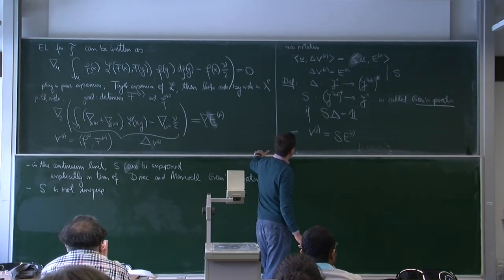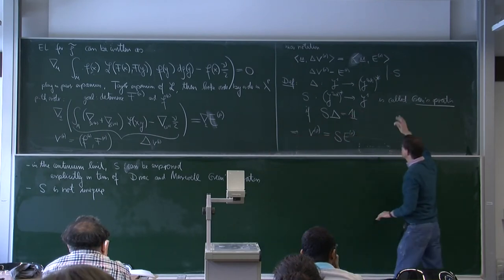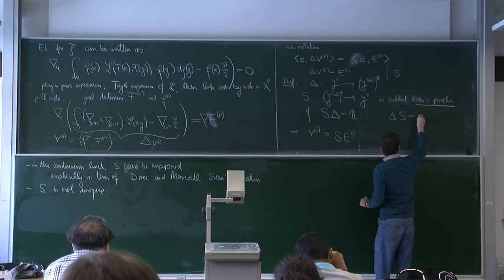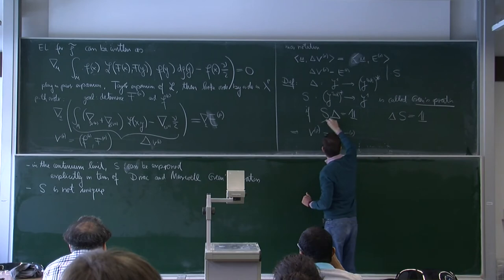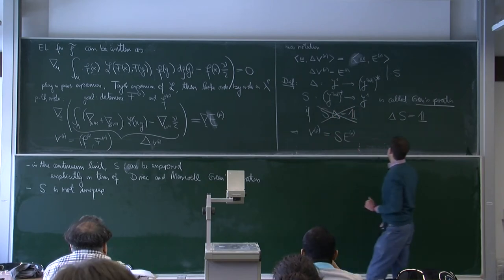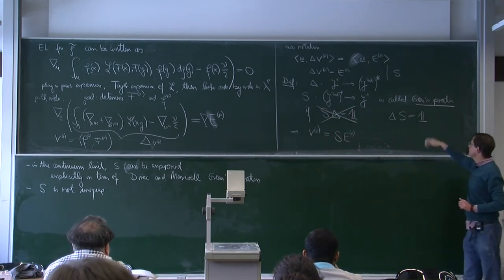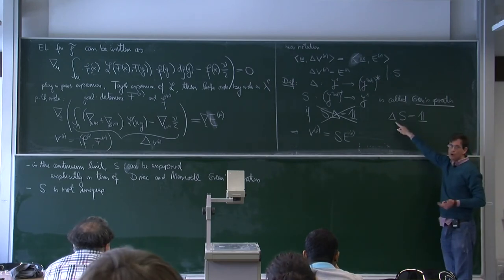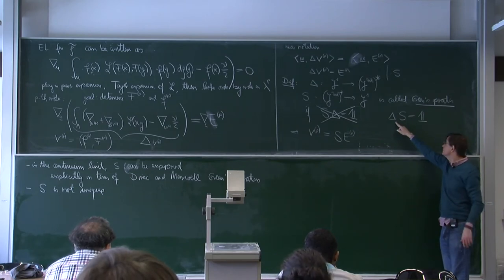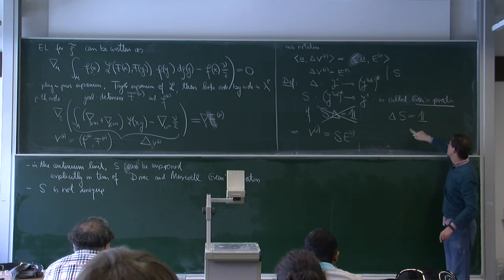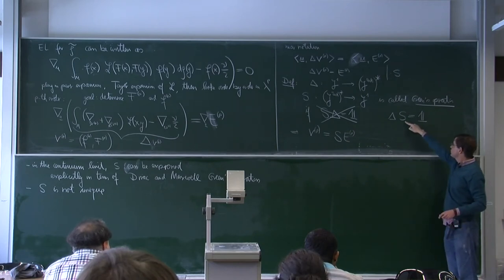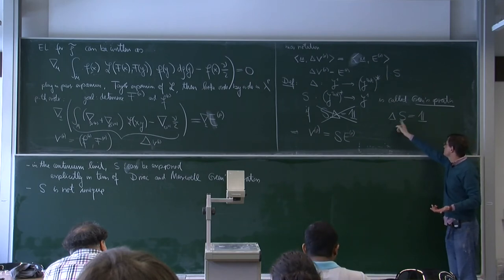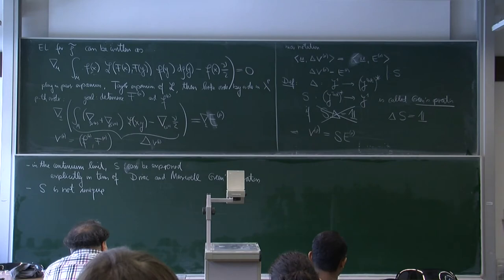It's actually better to define the Green's operator by Delta times S equals the identity rather than S times Delta, because if Delta has a kernel — and it does have a kernel since there are linearized field solutions — then S is only determined up to homogeneous solutions or solutions of linearized field equations.